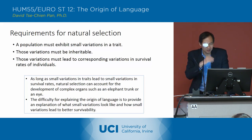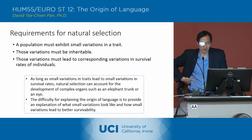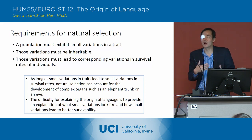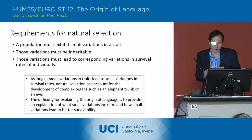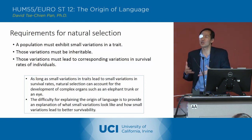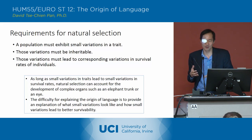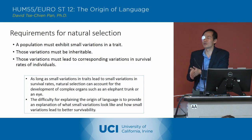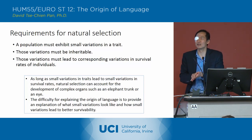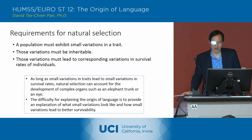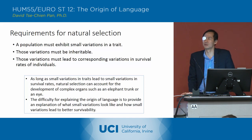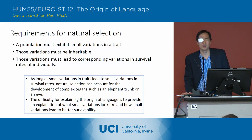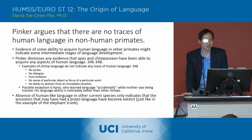The difficulty with language is you need to provide an explanation for what these small variations might look like, and how these small variations — especially in the beginning — lead to better survivability. That account is kind of missing in Pinker's account of natural selection.